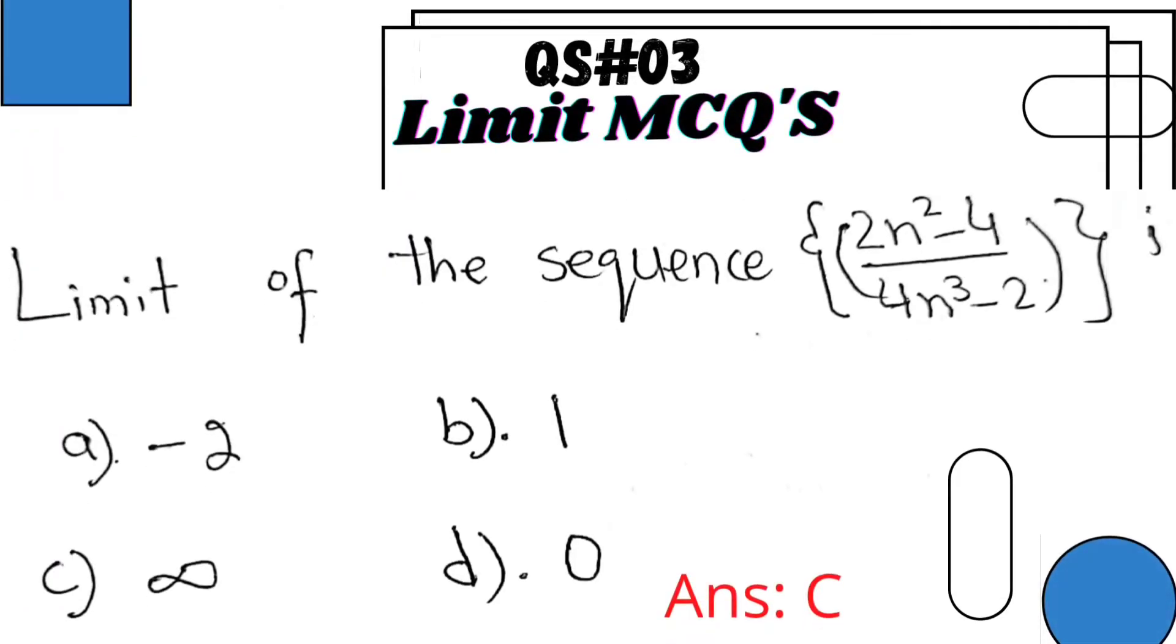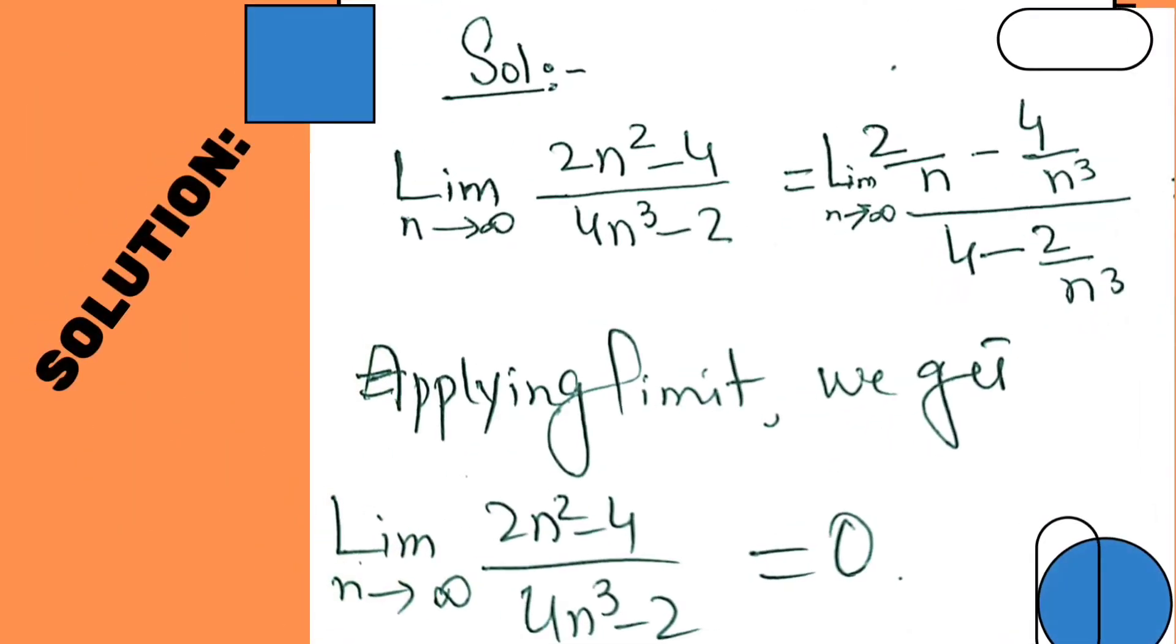Question number 3: limit of the sequence 2n square minus 4 over 4n cube minus 2. I found that the limit of this sequence is 0. But if someone knows a better solution, then they can tell me.